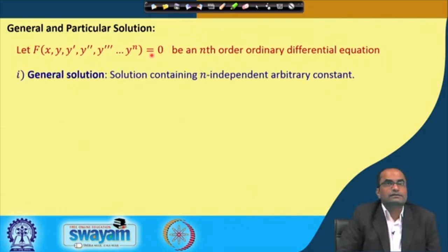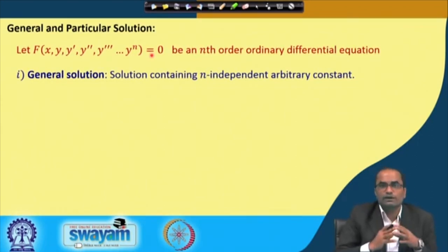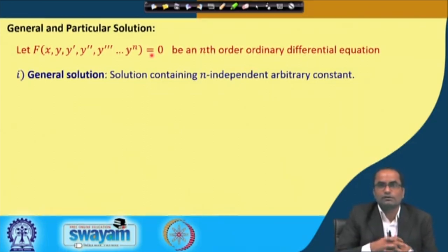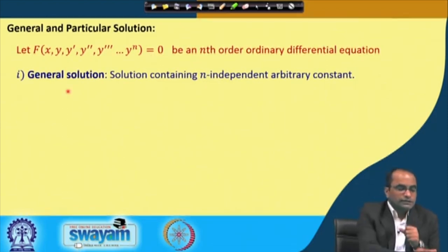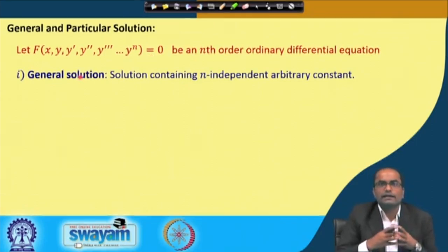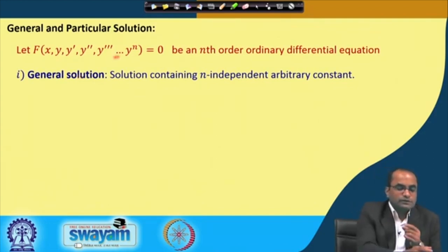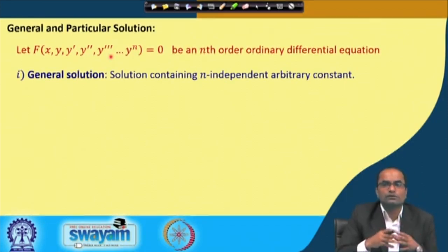The general solution is a solution containing n independent arbitrary constants. As observed in the previous slide, we started with a two-parameter family of curves and the corresponding differential equation was second order. Conversely, whenever we have a second order differential equation and find its general solution, it will contain two arbitrary constants or two parameters.